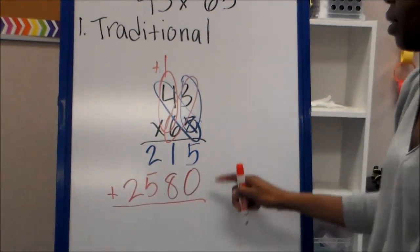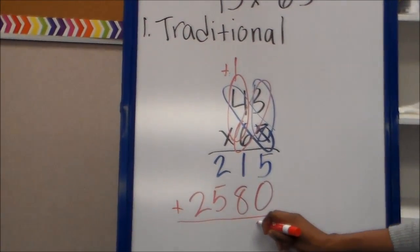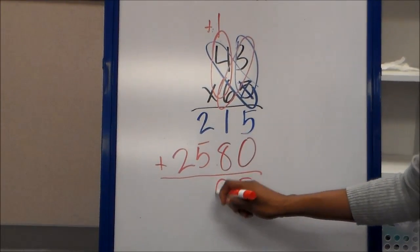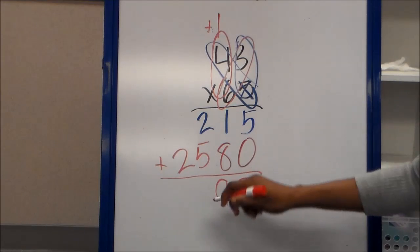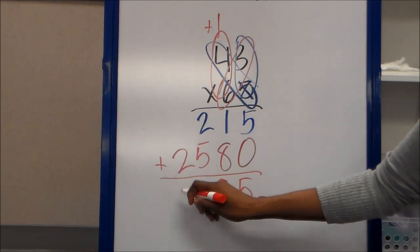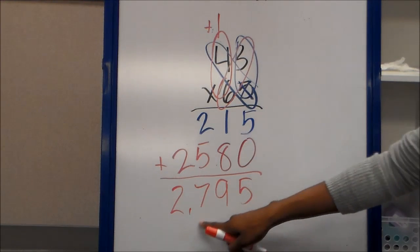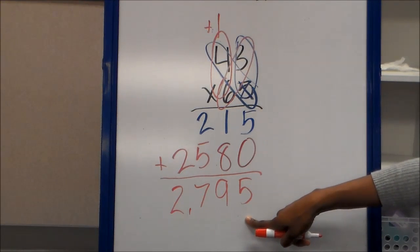And we're done multiplying. Now we have to add 5 plus 0 is 5. 1 plus 8 is 9. 2 plus 5 is 7. And 2 plus nothing is 2. So 2,795 is our answer.